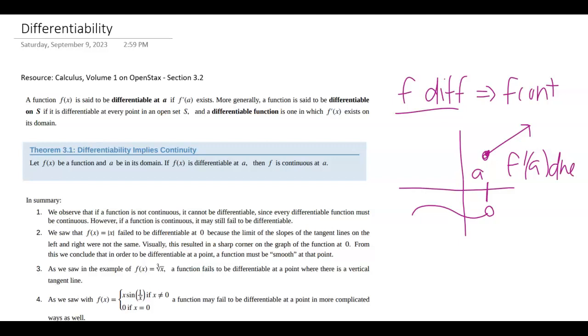So if you know a function is differentiable, it had to come from a continuous function. If the function is not continuous at a point, the derivative won't exist there.